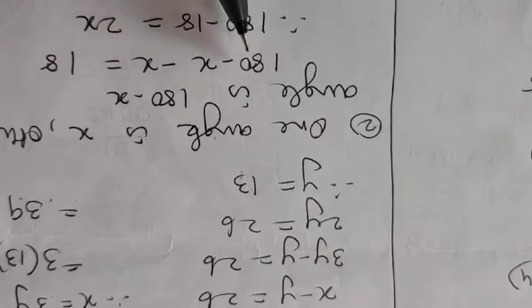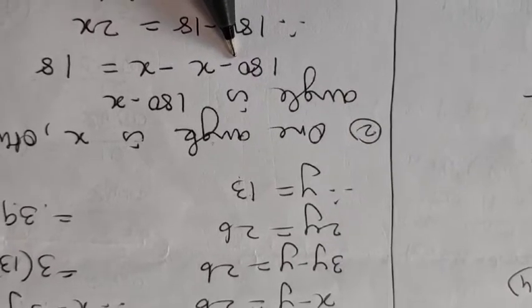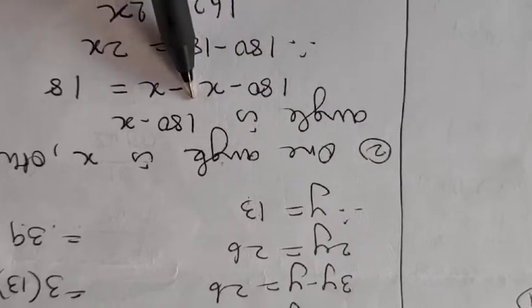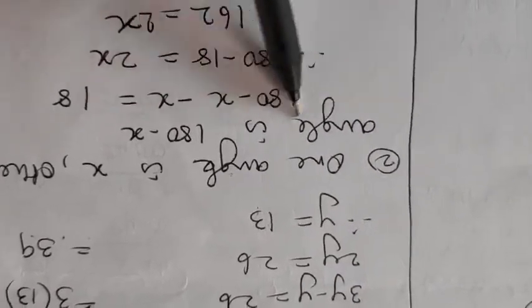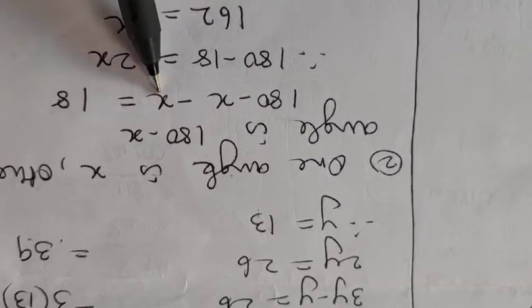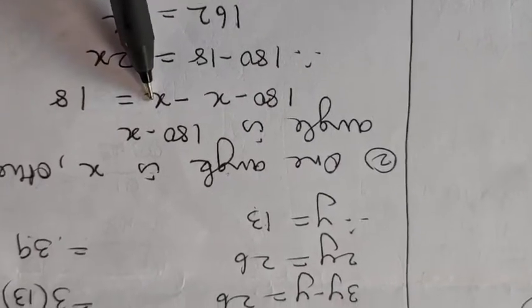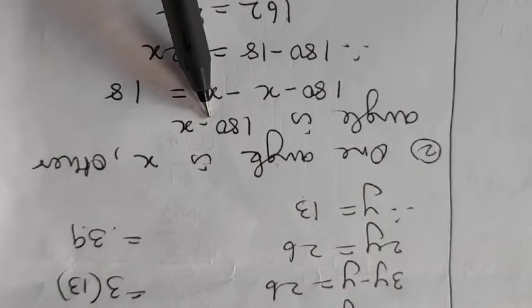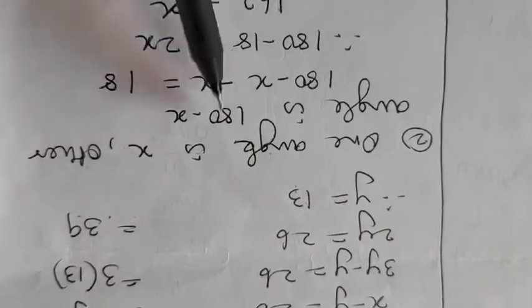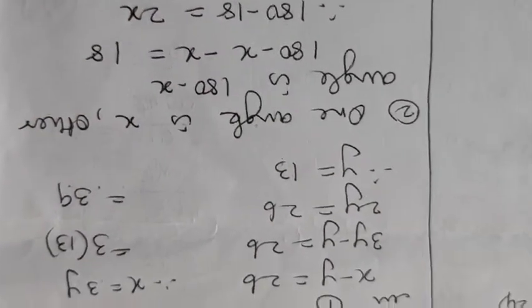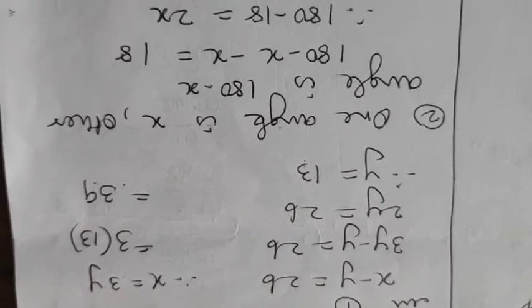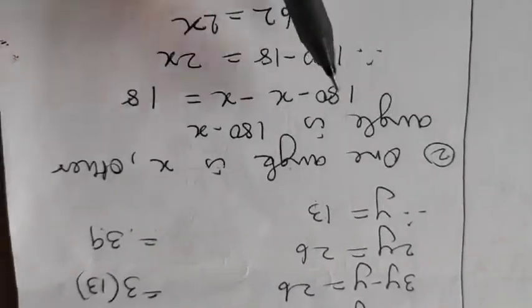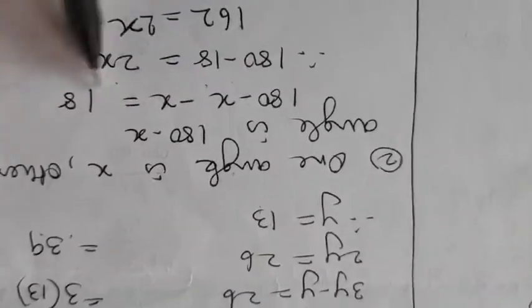So here the supposition will be let one angle be x. Then the other will definitely be 180 minus x because both are supplementary. Now the difference they are saying that is the larger one is greater than the smaller by 18. So this will be the larger I am assuming. Larger greater than the smaller. So larger minus smaller. Because one is x, the other is 180 minus x. It can be x minus. X can also be larger. 180 minus x can also be larger. You cannot say which one. So here I have taken as 180 minus x minus x is 18.